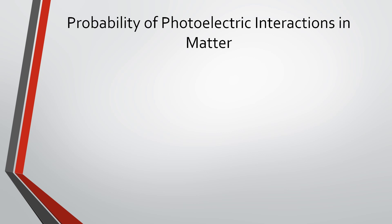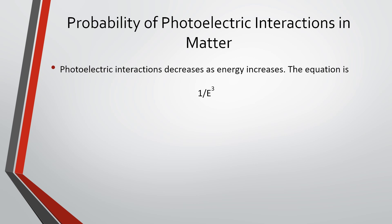The probability of photoelectric interactions decreases as energy increases, same basic structure as Compton but the equation is 1/E³. So if energy is 2, the probability is 1/8, whereas for Compton it was only 1/2 at the same energy. The photoelectric effect interactions decrease much more steeply as energy increases — it's much less likely to happen at higher energies.